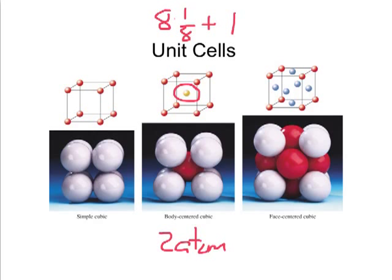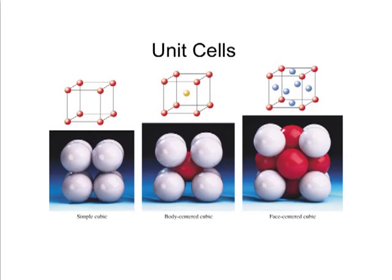Where do the atoms touch in a body-centered cubic cell? That's a little harder to see. It turns out they touch along what is referred to as the body-centered diagonal. For example, the top corner atom touches the atom in the dead center of the cube, which touches the atom in the back bottom right. So it's through the three-dimensional diagonal that these atoms are in contact, and that body diagonal has a length of 4r. You can connect that to the volume using the Pythagorean theorem — applied a couple of times.